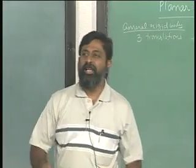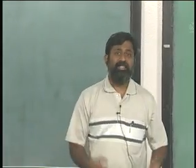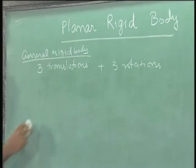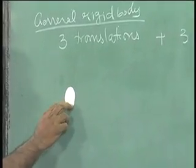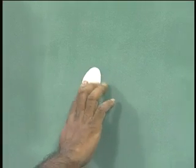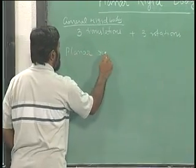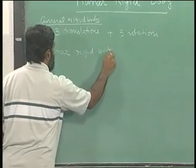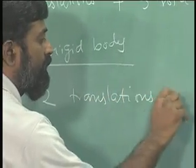In order to make understanding clear, let's reduce that to a body with fewer ways of motion. For example, if I take this board and a body attached to it — a rigid body — there are three ways in which it can move: horizontally, vertically, or it can rotate about an axis. In a planar rigid body, we expect two translations and a single rotation.